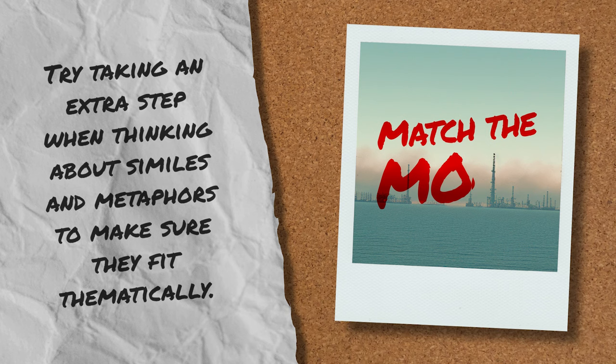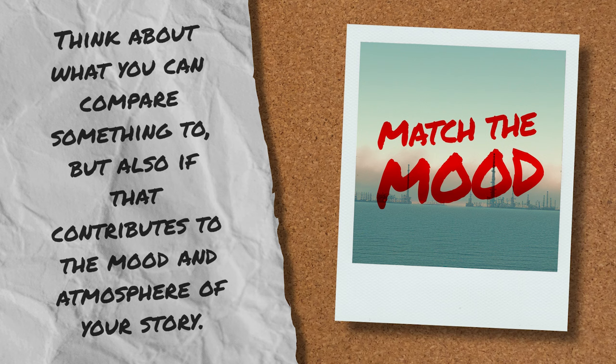Often when I approach a metaphor or a simile in my own writing my first thoughts are visual — what does this thing look like that I can compare it to? And that can often work just fine, but it's worth thinking about if that comparison works thematically too. For example, if Thea Lim had compared those towers to uncooked spaghetti it wouldn't have created the same imposing feeling that carries through to the rest of her world. Try taking an extra step when thinking about similes and metaphors to make sure they fit thematically — think about what you can compare something to, but also if that contributes to the mood and atmosphere of your story.